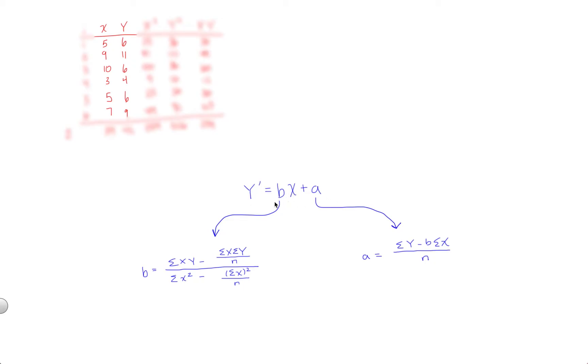So to do this, we're going to need to find B and then A. B is the slope of the line, and then B, which is a part of this formula, is used to find A, the y-intercept of that line.